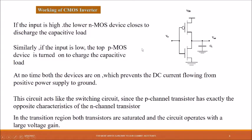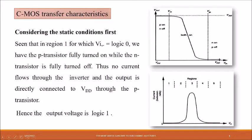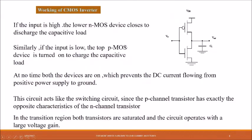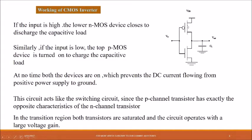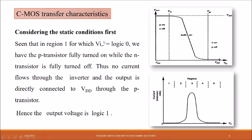Now let us see the CMOS transfer characteristics region by region, considering static conditions. In Region 1, where Vin equals logic zero, the P transistor is fully turned on and the N transistor is off. No current flows through the inverter, and the output is directly connected to VDD through the P transistor. Since PMOS is on, VDD is connected directly to the output, the capacitor charges, and you get a maximum output. The output voltage is logic one.